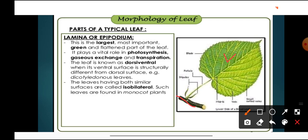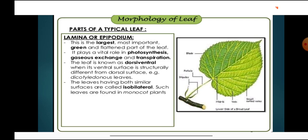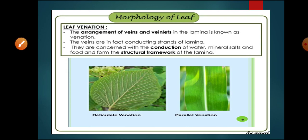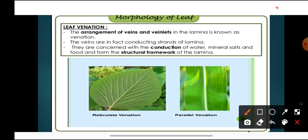Now, what is venation? Venation means the arrangement of veins and veinlets in the lamina. On the leaf lamina, veins and veinlets are present. Veins are the main conducting strands of the lamina — water and minerals are conducted through them. They also provide structural framework and support to the leaf lamina.